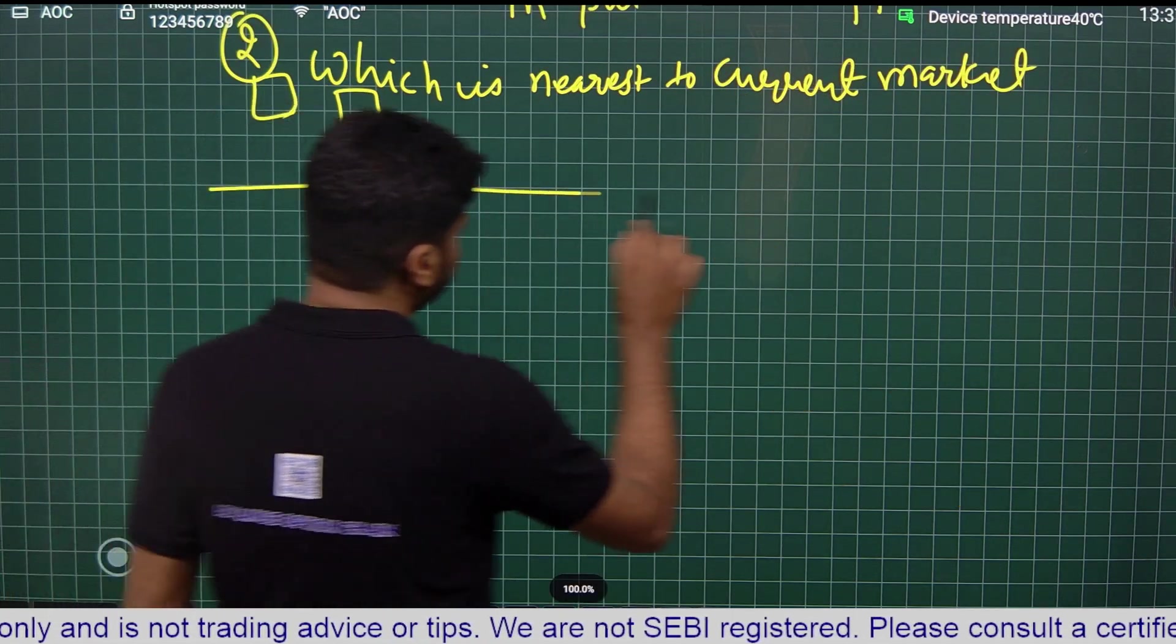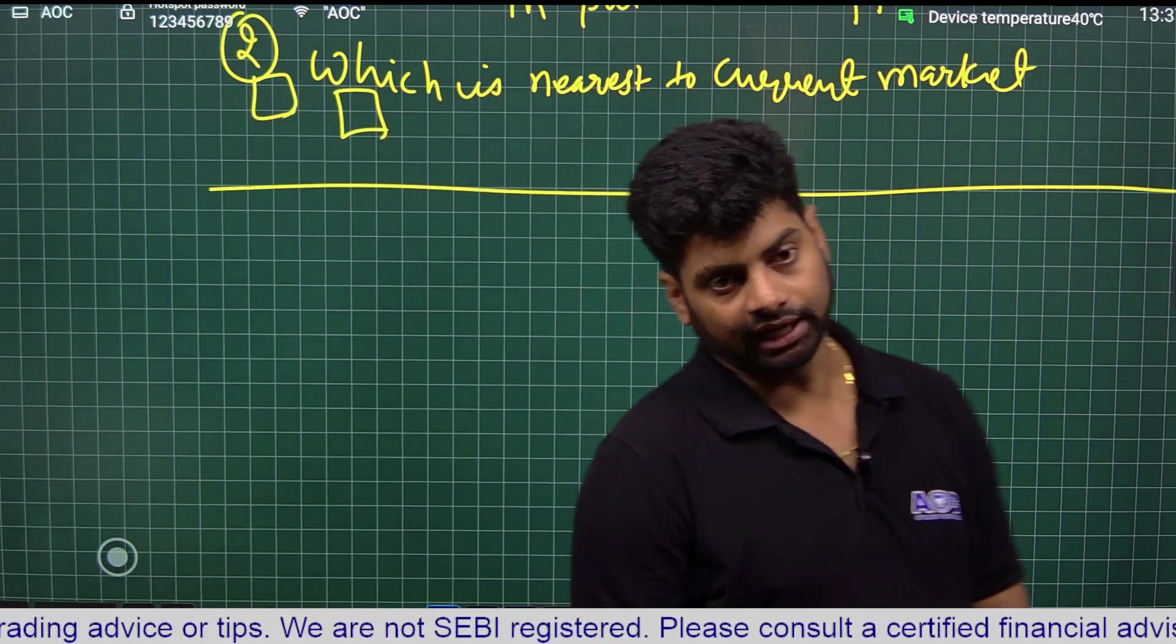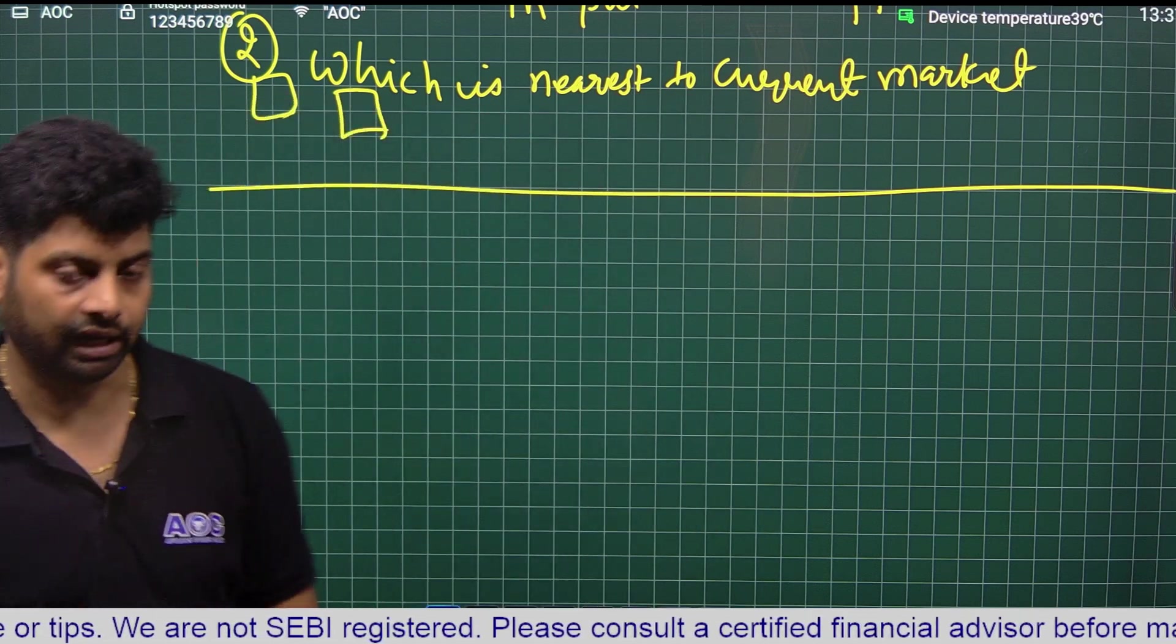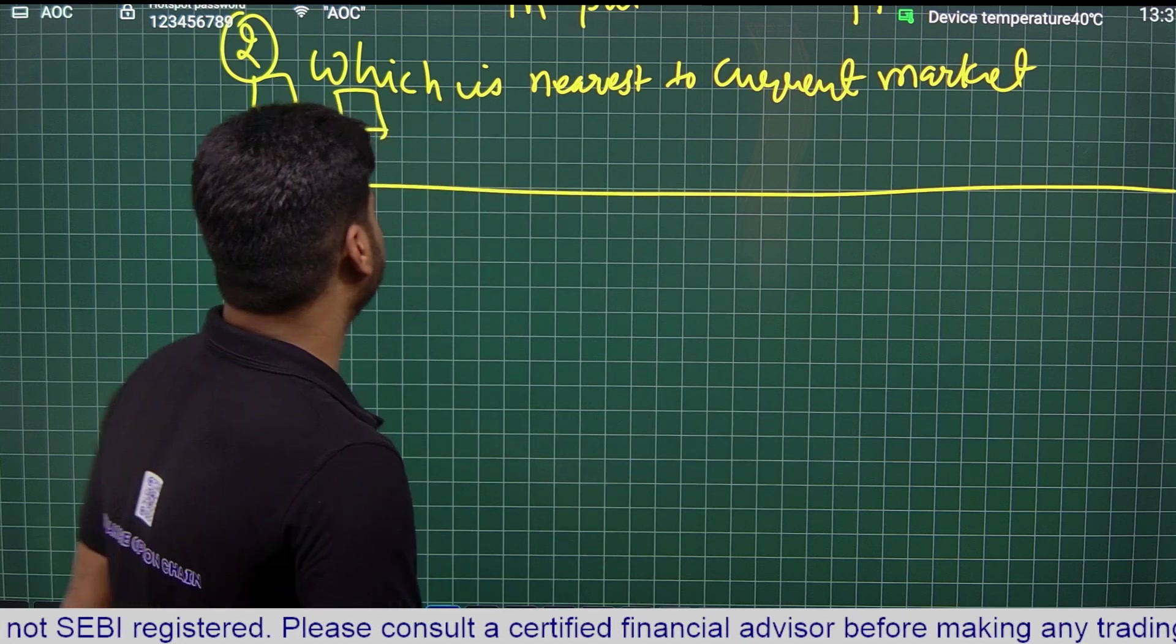In AOC you can easily spot that, we have made it very easy with color coding. But the underlying concept or the calculation we need to know a little bit about. So let's try to decode that.